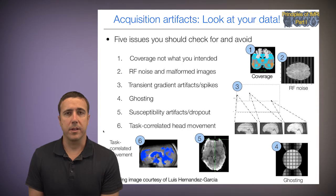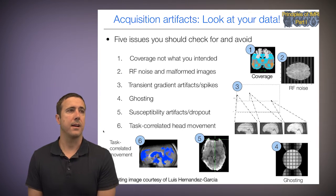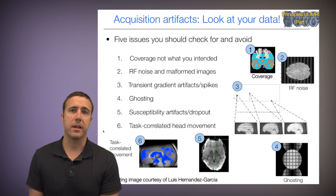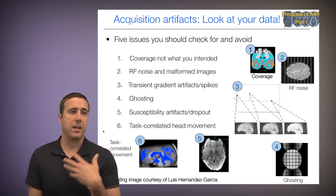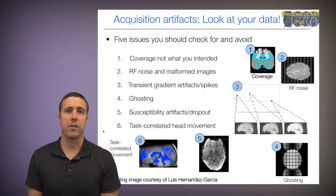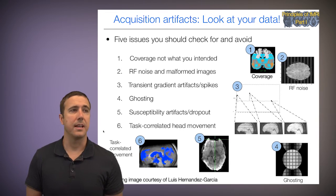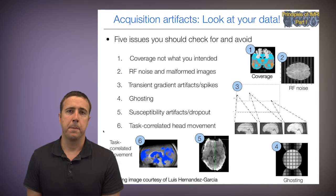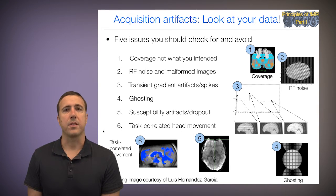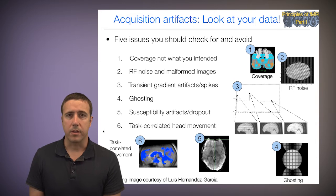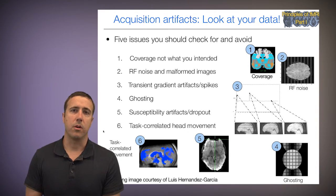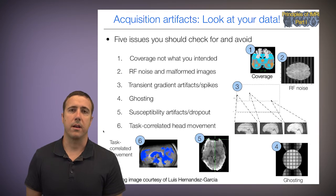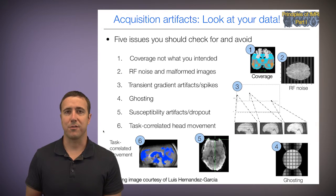And six is task-correlated head movement. Here is an example of a group analysis result where there's significant activation — in this case deactivation — in the ventricles, which is not physiologically plausible. We think this happened because of task-correlated head movement, and this is something that we can assess as we go along, as well as trying to correct for it after the fact.